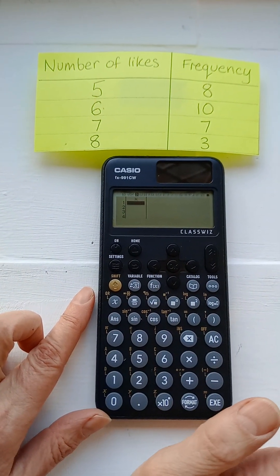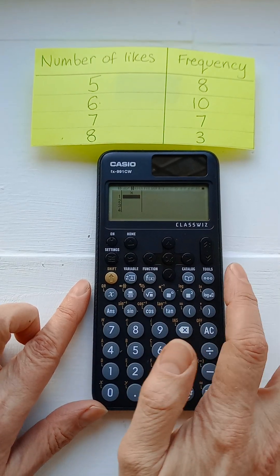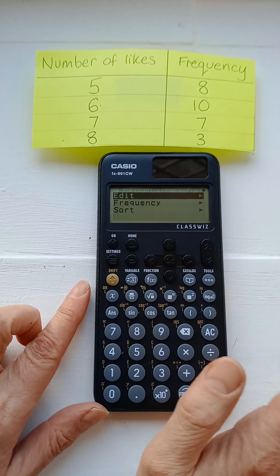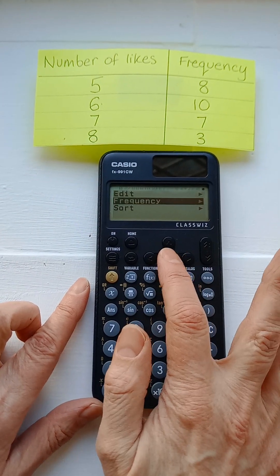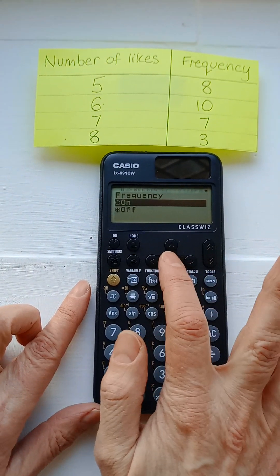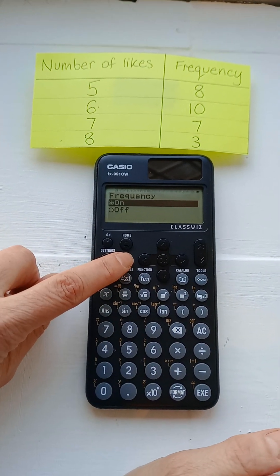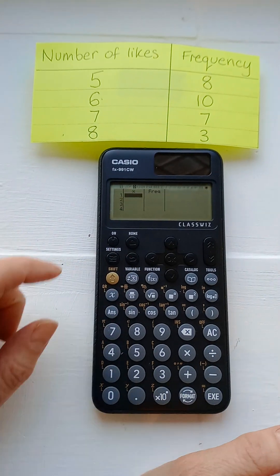Now we need a frequency column on this table. To do that we press tools, scroll down to frequency, choose that, choose on. And here we have a back key to press twice to get back to the table.